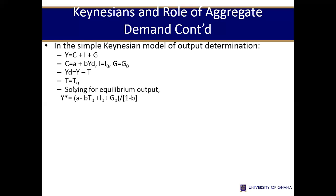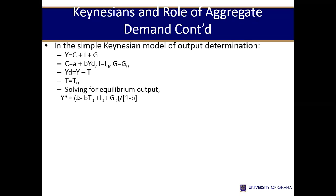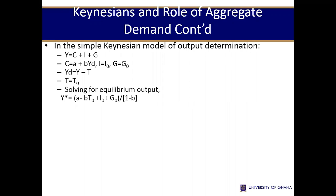From this equation, when we solve for equilibrium output, we get our Y* equal to the autonomous expenditure multiplied by 1 over (1 minus b). What we have in the bracket is called autonomous expenditure or autonomous spending, and 1 over (1 minus b) is the multiplier — we normally write it as 1 over (1 minus b) times the autonomous spending.